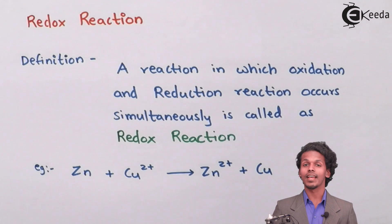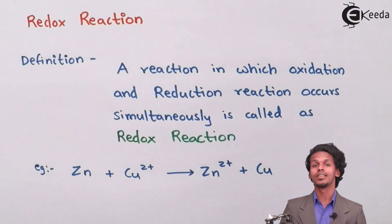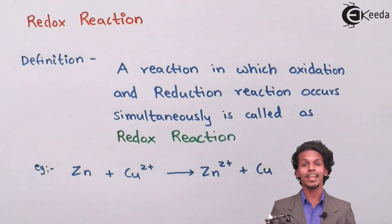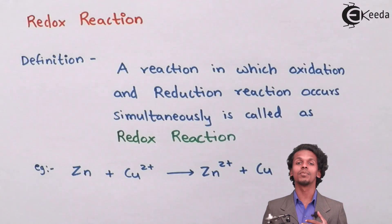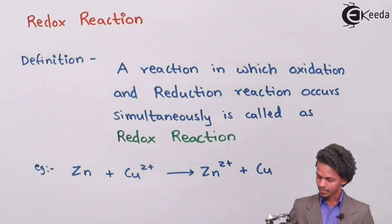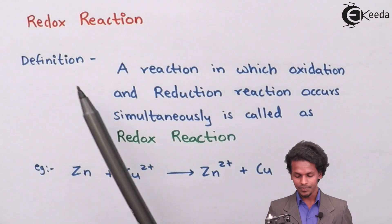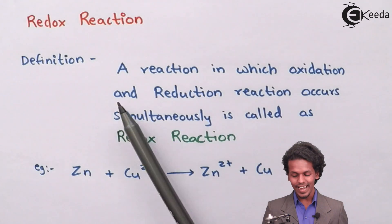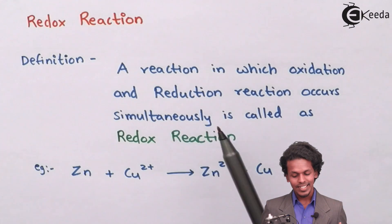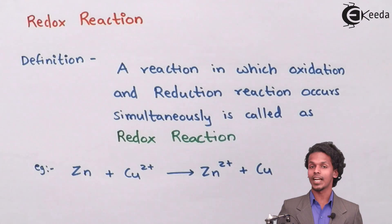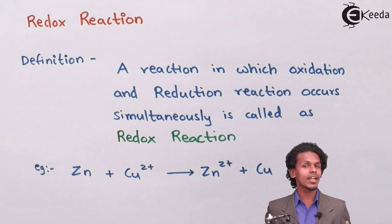As the name suggests, Redox is made up of two words: reduction and oxidation. So let us see the definition and learn more about it. According to the definition, a reaction in which oxidation and reduction reaction occurs simultaneously is known as Redox reaction.